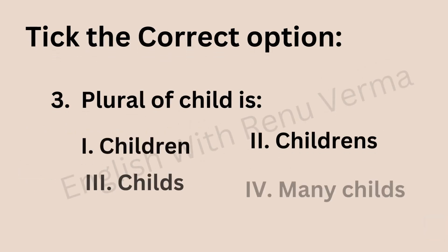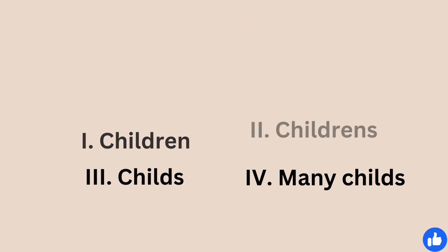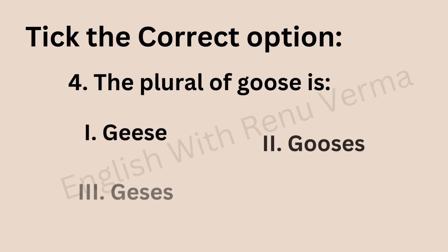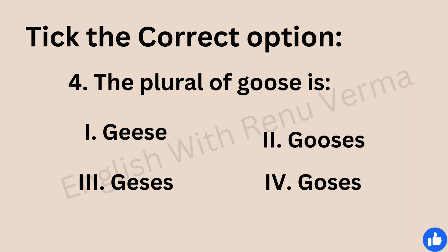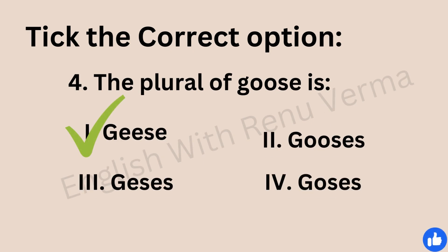Question number three: the plural of 'child'. We already know the plural of 'child' is 'children'. Sometimes while speaking we use 'childs', which is completely wrong — the correct plural is 'children'. Next: the plural of 'goose'. The options are geese, gooses, gazes, or gooses. The correct answer is 'geese'.